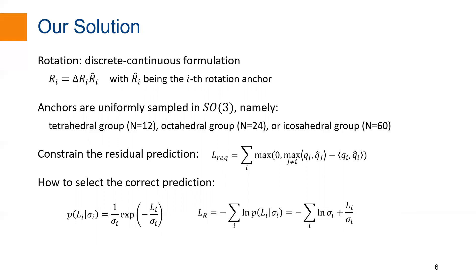The remaining problem is how to select the correct one among all the predictions. This is achieved by predicting an uncertainty score for each anchor. During inference, the prediction with smallest uncertainty score is selected as our final output. We integrate the ShapeMatch loss and the uncertainty score into a Laplace distribution. The uncertainty score could be automatically trained by minimizing the negative log-likelihood.